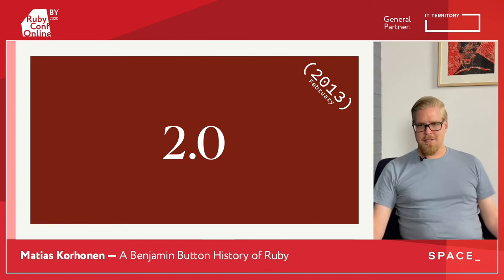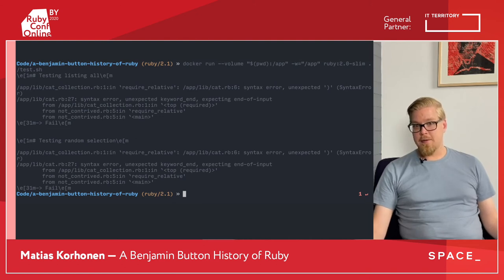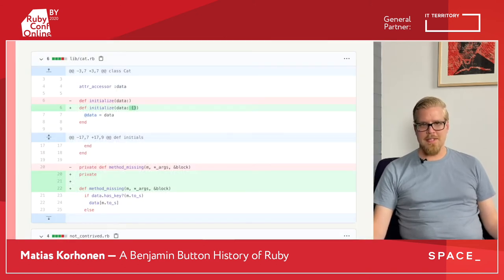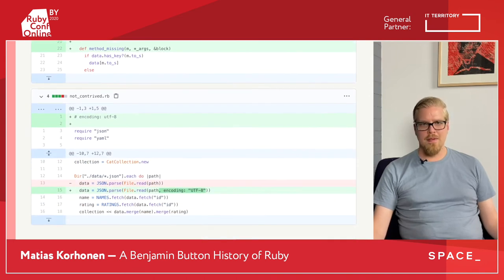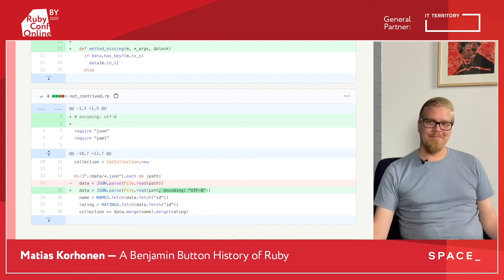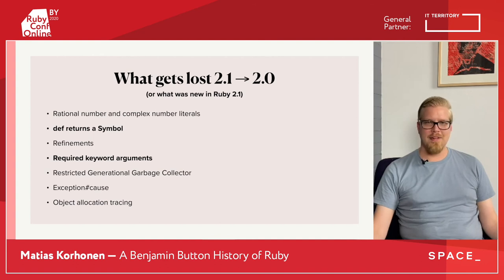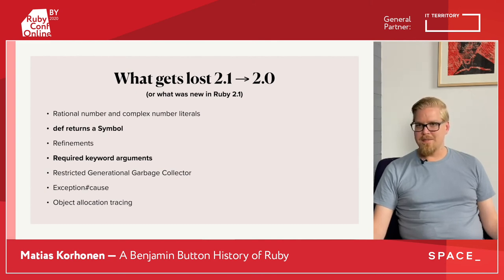Moving on to the nice round number of Ruby 2.0 from February 2013. Here at least we find that required keyword arguments don't work, so we need to factor those out. And depths no longer returns a symbol, so we need to change that as well. And we need to explicitly tell Ruby that the input JSON is UTF-8. At least finally we got to change more than one line. Other stuff lost between 2.1 and 2.0 would be refinements, rational number and complex number literals — but nothing super exciting necessarily.